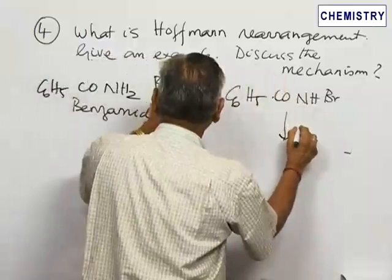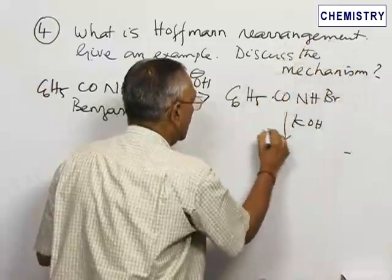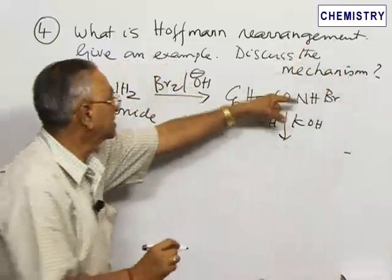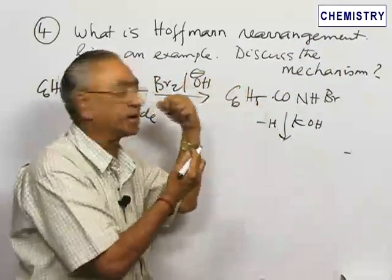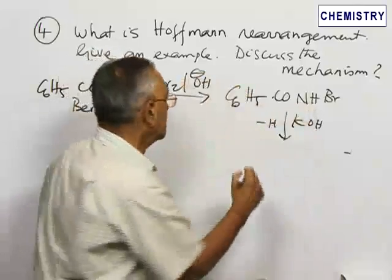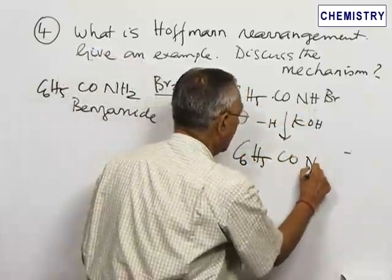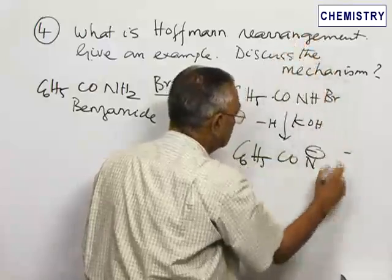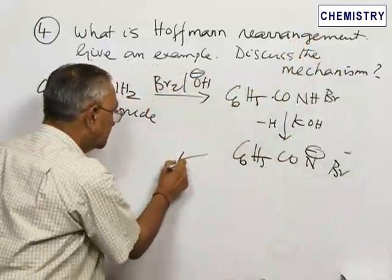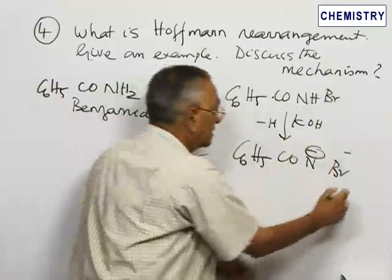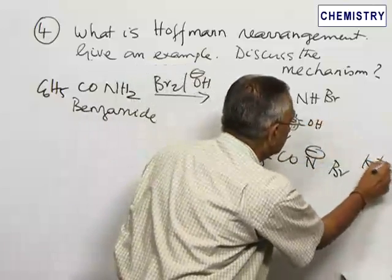Now, with excess potassium hydroxide present, the remaining hydrogen attached to the nitrogen is acidic and gets removed. A base always abstracts a proton — so KOH abstracts this hydrogen as a proton, leaving behind the two electrons on nitrogen. This gives rise to C₆H₅CONBr with a negative charge on nitrogen, which is an anion with potassium as the counter ion.